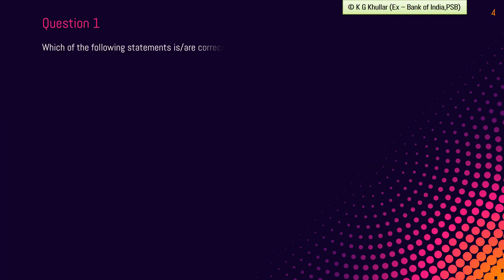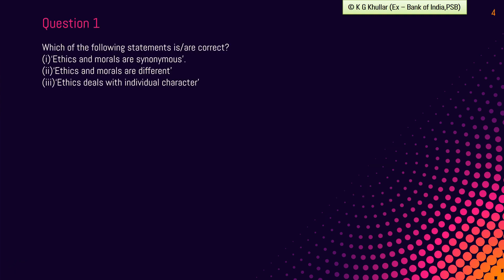First question: which of the following statements is or are correct? First statement: ethics and morals are synonymous. Second: ethics and morals are different. And third: ethics deals with individual character. Friends, both ethics and morals deal with right and wrong conduct, but the fact is they are not the same.